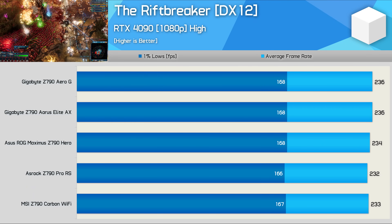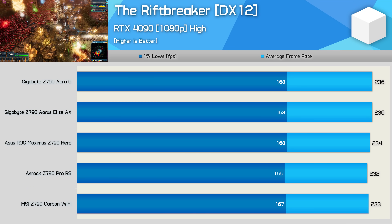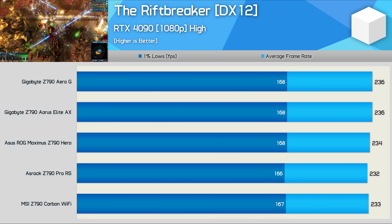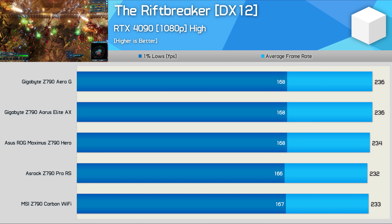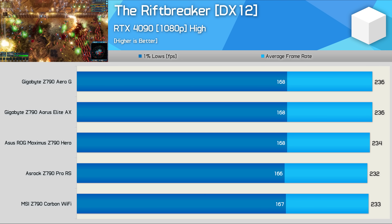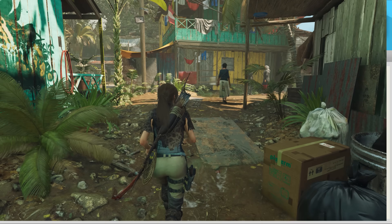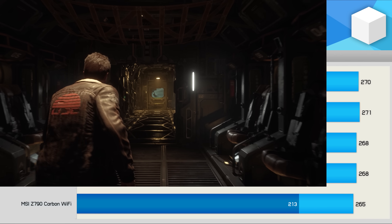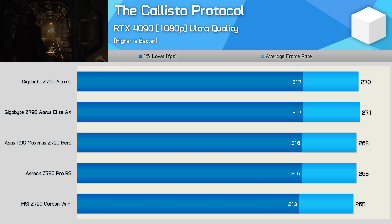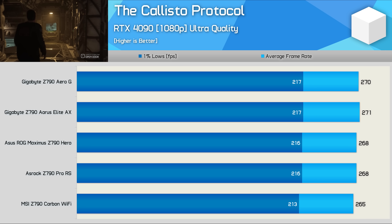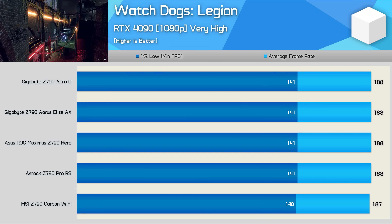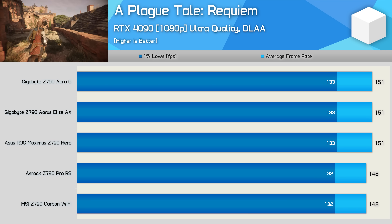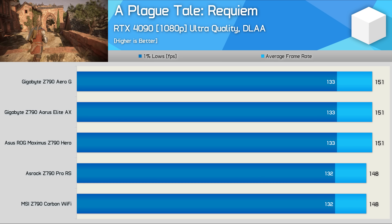First off, we have The Riftbreaker, and everything looks pretty normal here — Gigabyte, ASUS, ASRock, and MSI all delivered roughly the same level of performance. There is some variation in memory timings used by each brand, but nothing significant enough to heavily influence the data. In Shadow of the Tomb Raider, results are much the same with no more than a 1% deviation. The Callisto Protocol is also much the same, with up to a 2% difference between the fastest and slowest Z790 boards. Watch Dogs Legion shows basically no difference, with all boards within one FPS of one another. And A Plague Tale: Requiem shows no more than a 2% performance difference.